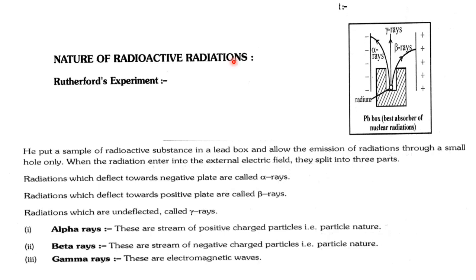Different types of radiations are emitted when an unstable nucleus undergoes radioactivity. This was proved by Rutherford in an experiment. He placed a radioactive substance in a lead box — lead absorbs all radiations — with an opening through which particles are emitted. The lead box was placed in an electric field with a positive potential on the right and negative on the left. Three types of radiations were observed: some rays deflected toward the positive terminal, some toward the negative, and some underwent no deflection at all.